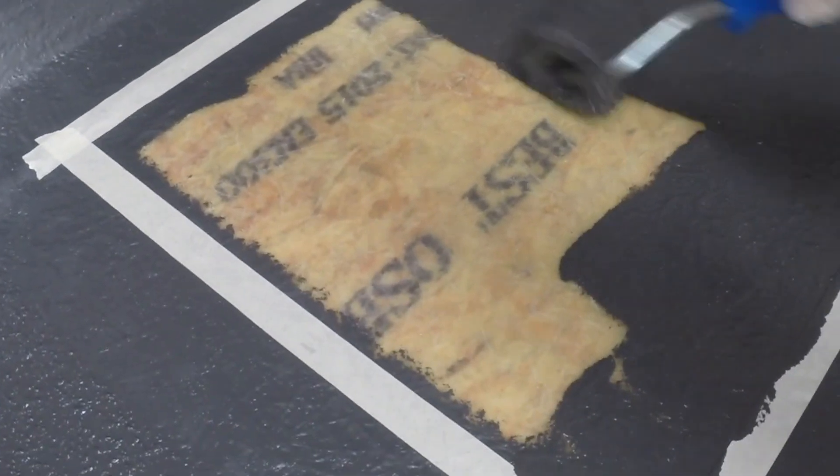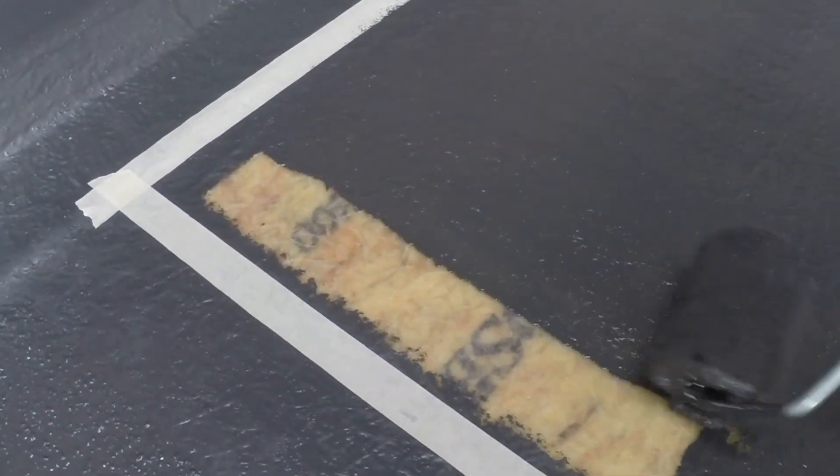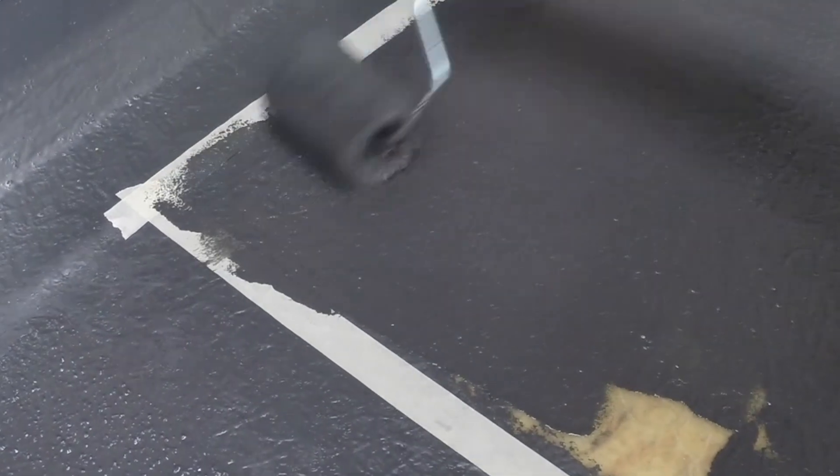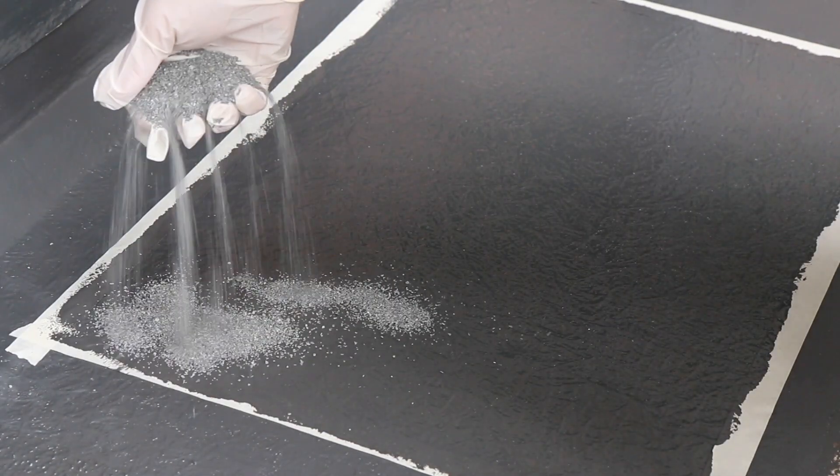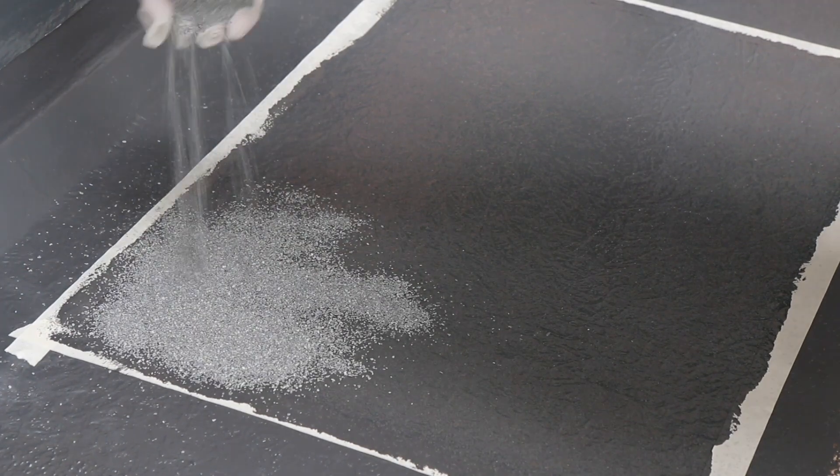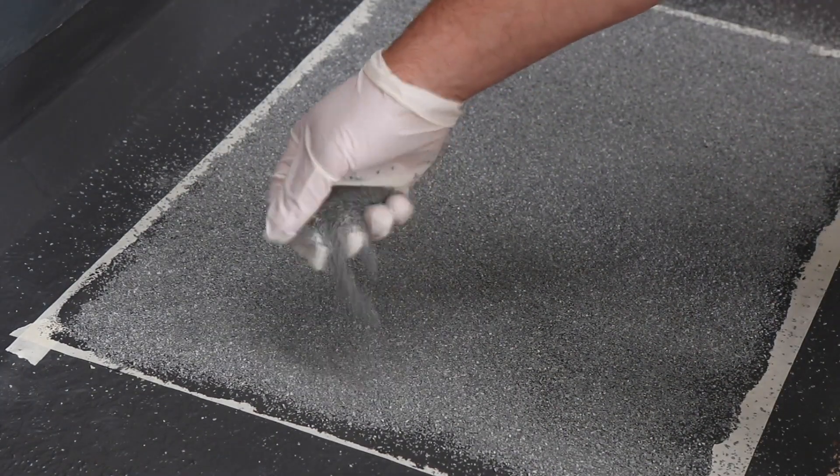To achieve an exposed aggregate finish for a felt roof appearance, apply topcoat to the roof in meter-wide strips. Sprinkle the granulated slate over the topcoat using 0.75kg per square meter.